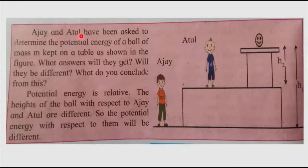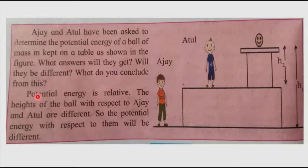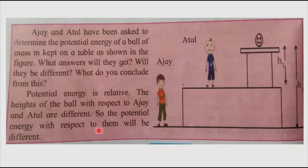Students, Ajay and Atul have been asked to determine the potential energy of a ball of mass M kept on a table as shown in the figure. Their answers will be different because the height of the ball with respect to each of them is different. Potential energy is relative. As height increases, potential energy also increases; as height decreases, potential energy also decreases. The height of the ball with respect to Ajay and Atul are different, so the potential energy with respect to them will be different.